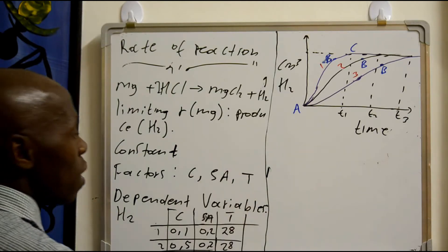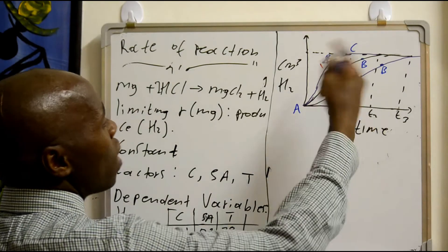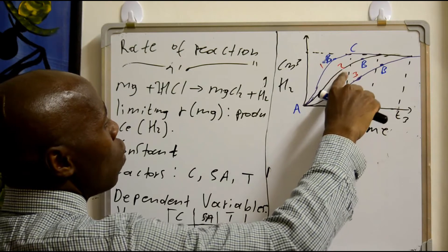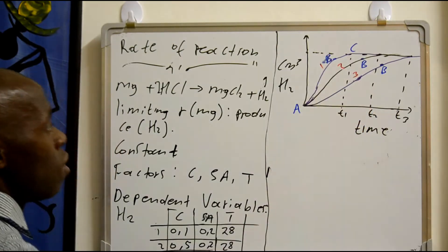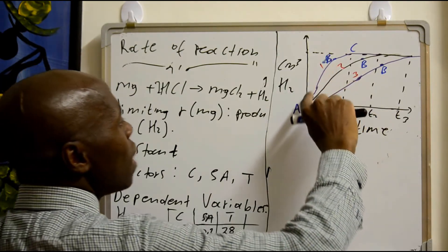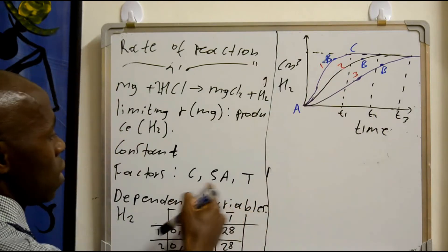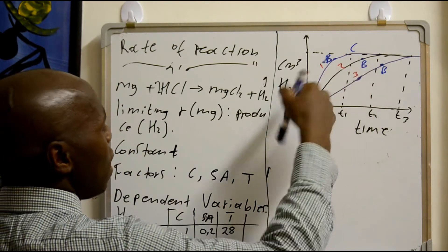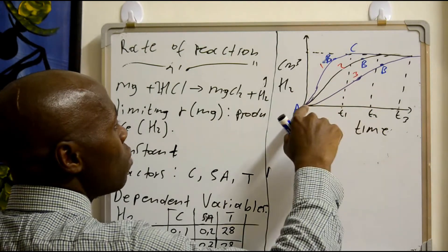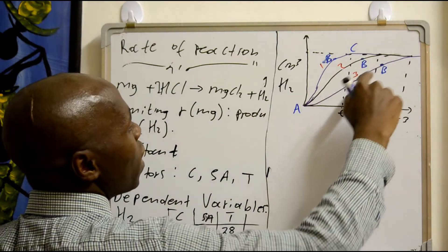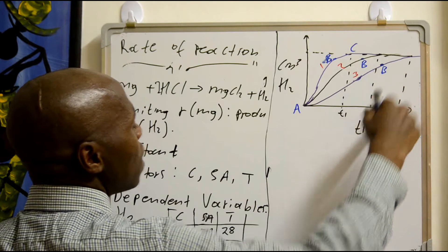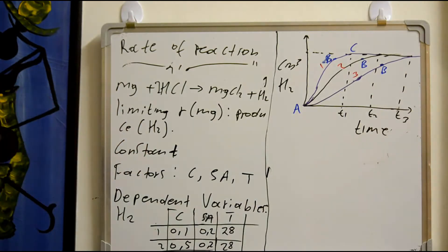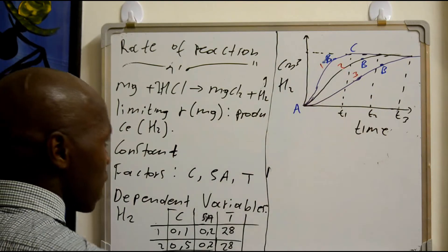Also, the temperature will do the same thing. The temperature here we can say was atmospheric, which is 25 degrees. But here in reaction 1, the temperature was very high, so the reaction rate increases. And in reaction 3, the temperature was lowered, so it is very low here. Then the reaction rate took some time. So these factors affect the reaction rate.